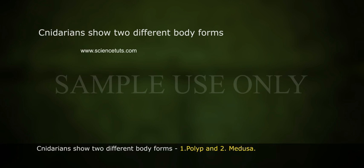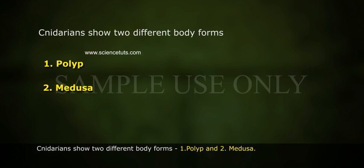Cnidarians show two different body forms: one, polyp, and two, medusa.